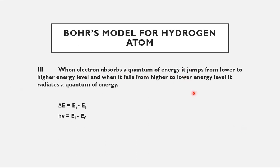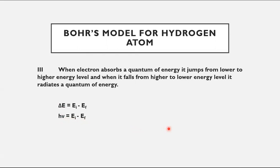Postulate 3: when an electron absorbs a quantum of energy — a discrete packet of electromagnetic radiation called a photon — it jumps from a lower to a higher energy level. When it falls from a higher to a lower energy level, it radiates a quantum of energy. The emitted radiation equals the difference between the two energy states: hν = Ei − Ef. These were the three postulates of the Bohr atomic model.